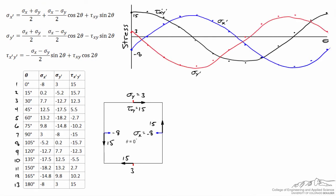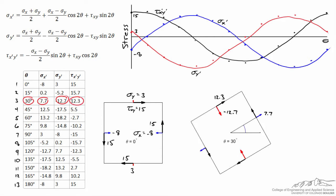What these values and graphs mean is: for example, if we rotate the differential element counterclockwise by 30 degrees, the transformed stresses will be 7.7, negative 12.7, and 12.3. This is what the differential element would look like if we rotated it counterclockwise by 30 degrees.